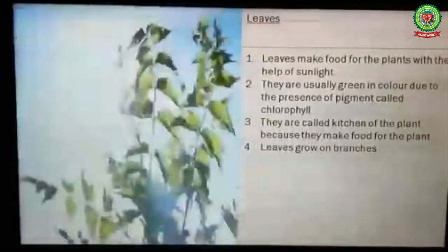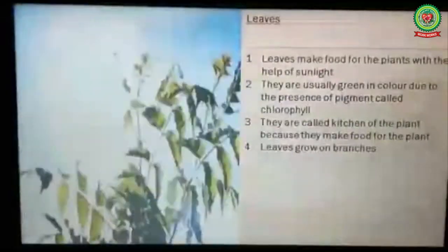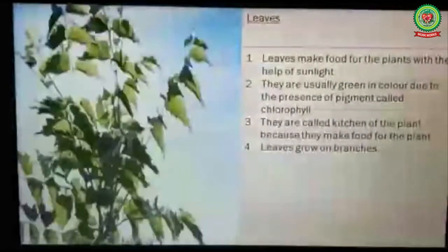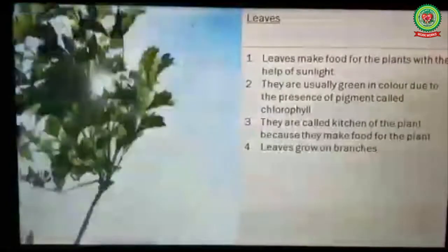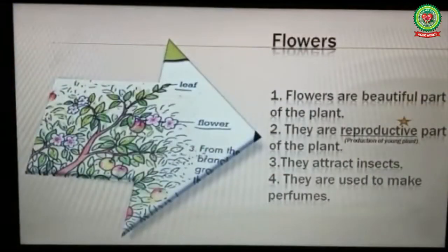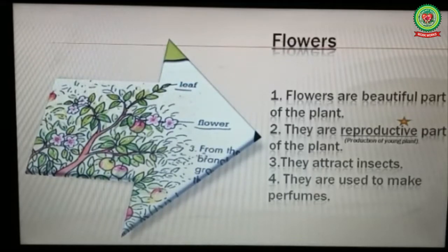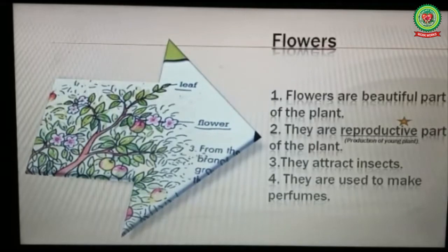Leaves are called the kitchen of the plant because they make food for the plant. Leaves grow on branches. Flowers are a beautiful part of the plant. They are the reproductive part of the plant. Reproductive means production of a young plant. They attract insects and are used to make perfumes.